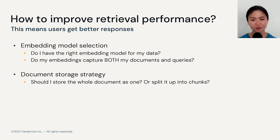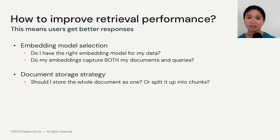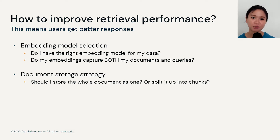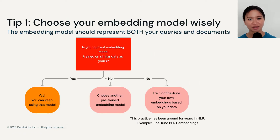How do you improve retrieval performance to allow users to get better responses? At a very high level, there are two different strategies. One is regarding your embedding model selection, and the second has to do with how you store your documents. Let's start with embeddings.